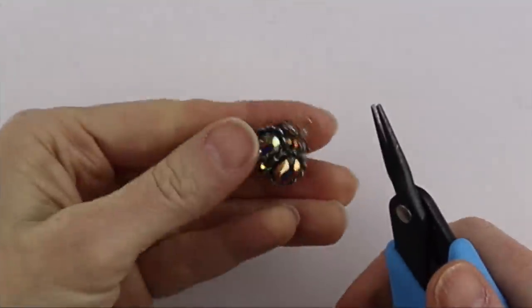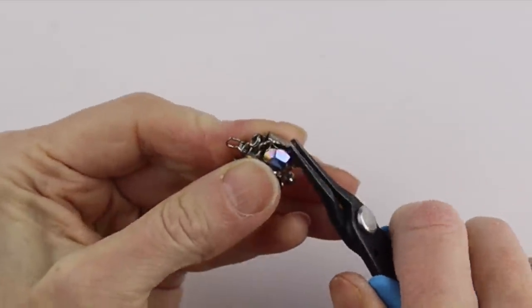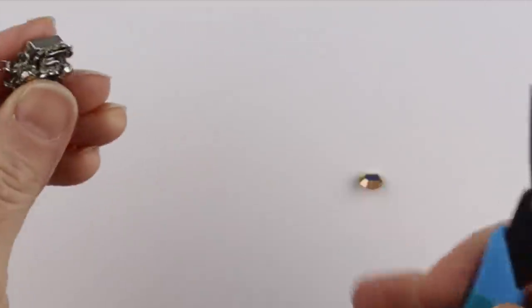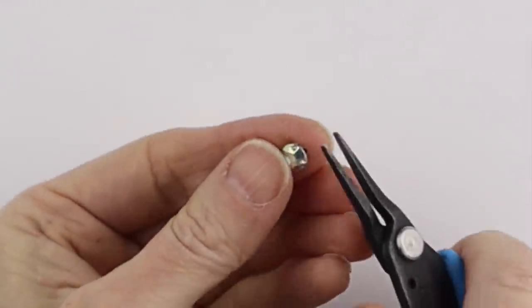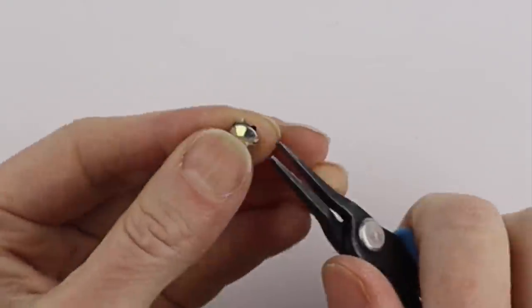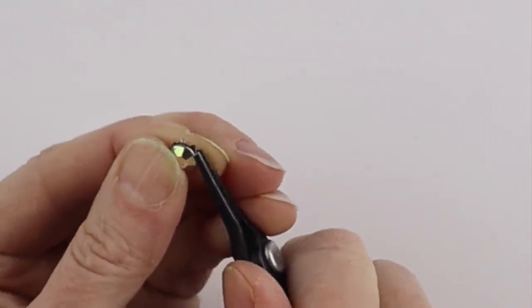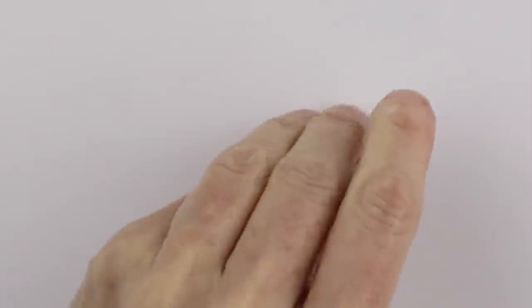You can take vintage jewelry, you can just remove the rhinestones that are inside. I also have these little ones that I just found in my stuff. You can just do the same, just pull back the prongs, pop them out, and you can reuse that.